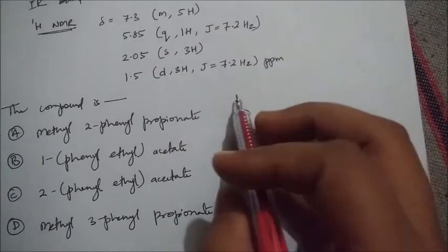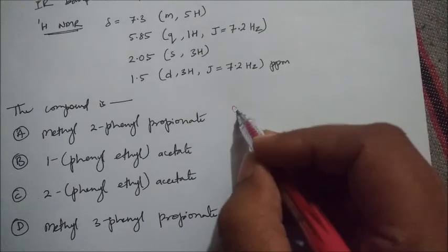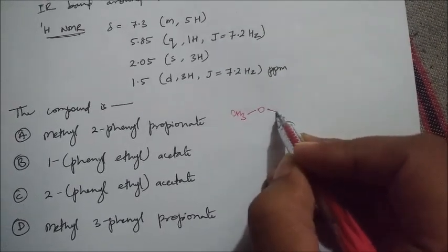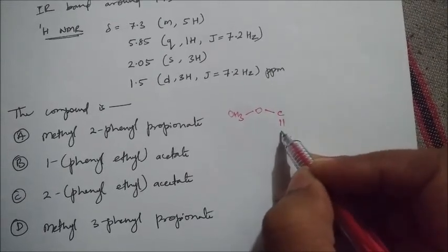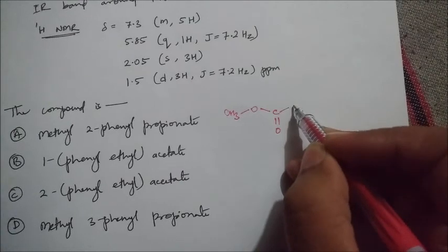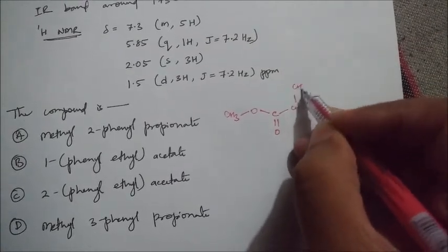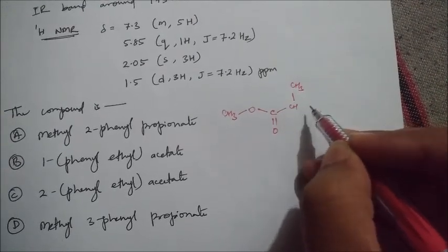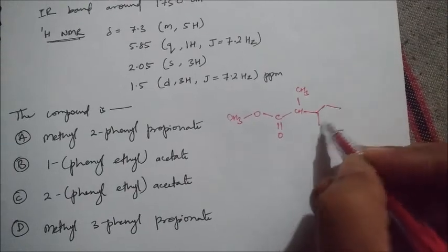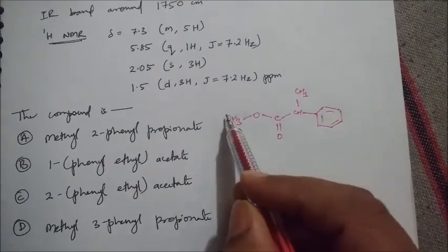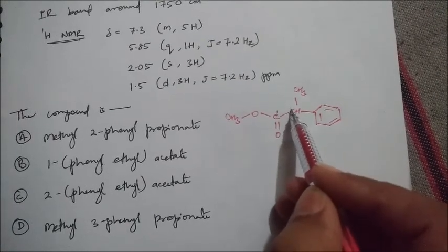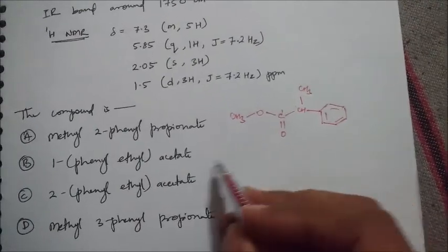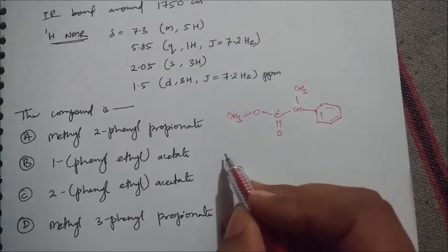For the first one, methyl 2-phenylpropionate, I will draw this. It will be a propionate with the first carbon and second carbon, and towards the second carbon a phenyl group is attached. So it becomes methyl ester with phenyl on carbon 2 — that is methyl 2-phenylpropionate.